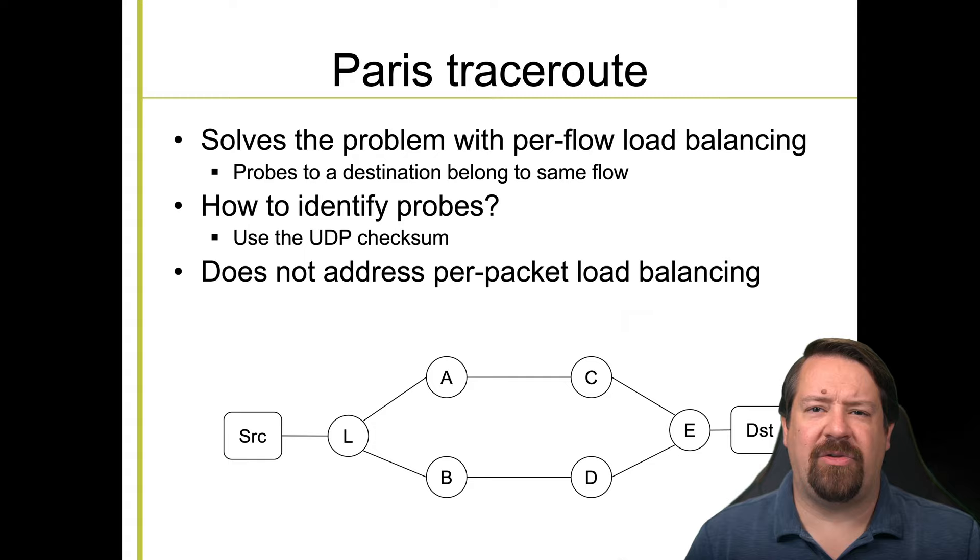So Paris tracerout, the improved tracerout version being proposed in this paper, can't fix router bugs or the existence of NAT boxes. But it addresses the issue of per flow load balancing yielding incorrect results. Remember that the original tracerout application used the port number as a sequence number to identify the pervs as they return. Paris tracerout instead uses the UDP checksum. Of course, the checksum is supposed to be determined by the other header fields and the payload. So to do this, Paris tracerout must manipulate the payload in such a way that it yields the desired checksum. However, since the checksum math is so simple, this is a relatively easy process.